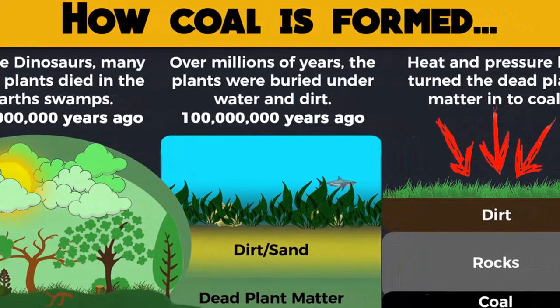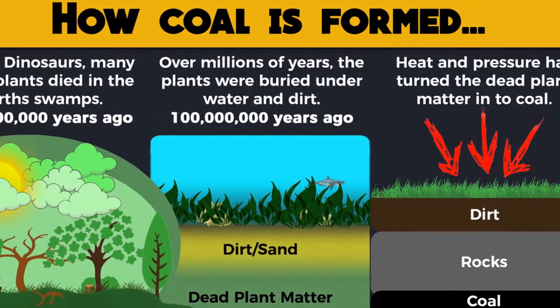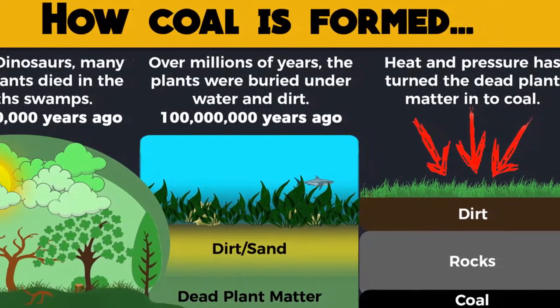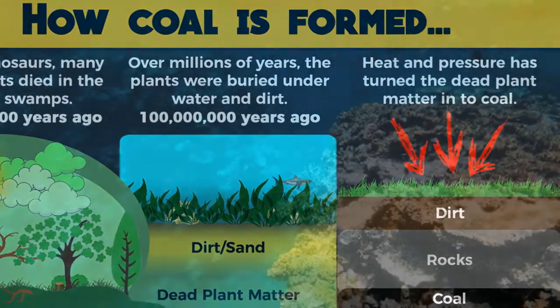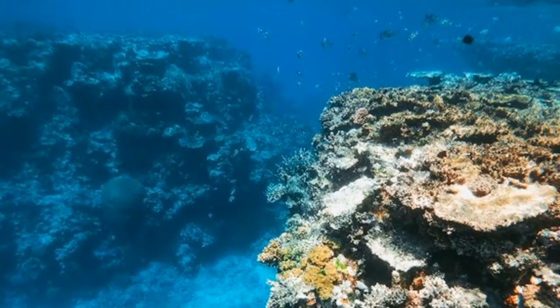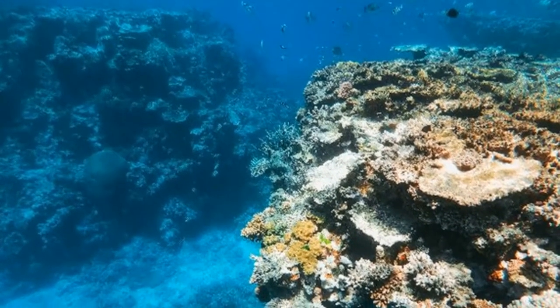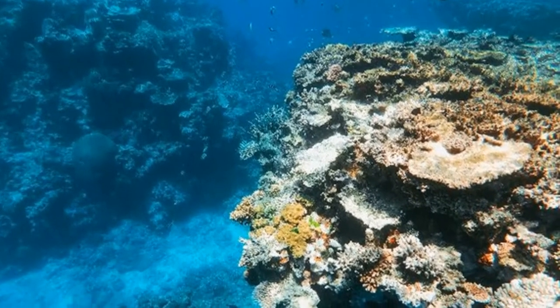Coal is formed mostly from plant material that accumulated in a swampy environment above sea level. Oil and gas are derived from the remains of both plants and animals having a marine origin.